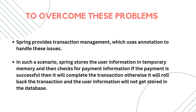To resolve this problem, Spring introduces transaction management, which uses annotations to handle these issues. Spring stores user information in temporary memory — it is not stored directly into the user table. It will check the payment information, and only if the payment is successful will it complete the transaction. If the payment confirmation is also received, only then will it store both pieces of information into the tables as a successful transaction; otherwise it will roll back the complete transaction.